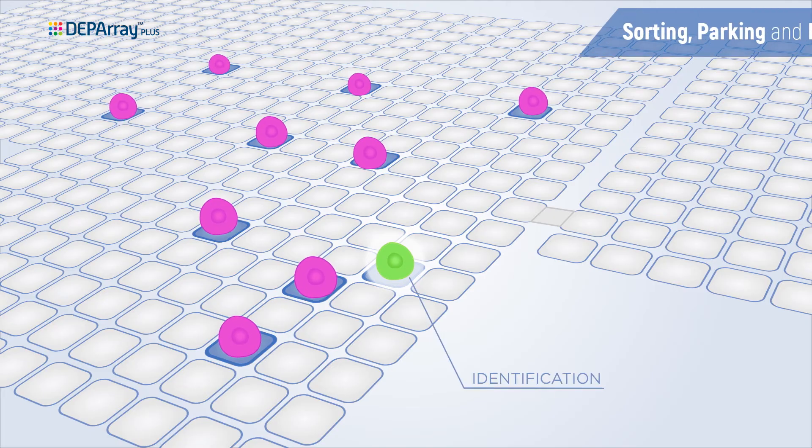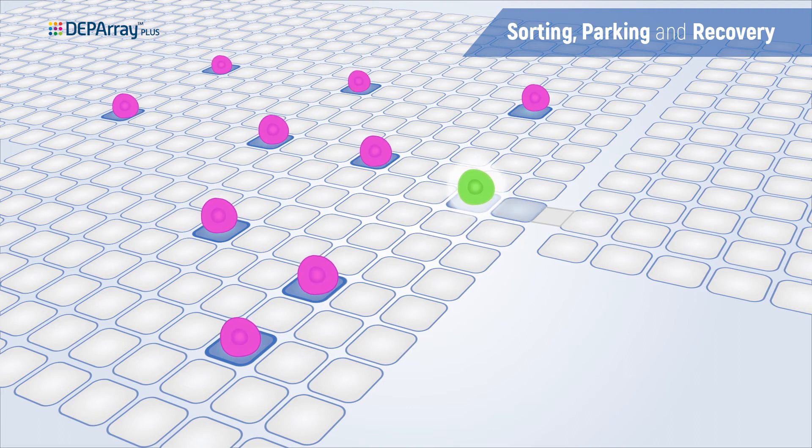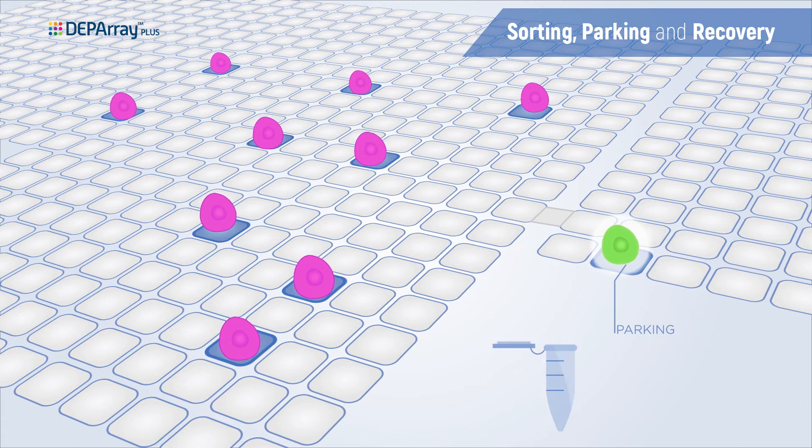After imaging, cages with cells of interest are electronically programmed to move to a parking area and subsequently to a recovery area, where the selected cells will finally be dispensed into slides, collection tubes, or culture plates.